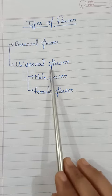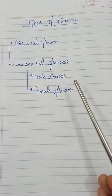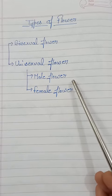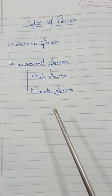Examples of unisexual flowers include papaya, cucumber, corn, and so on.